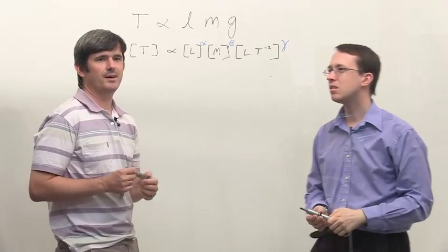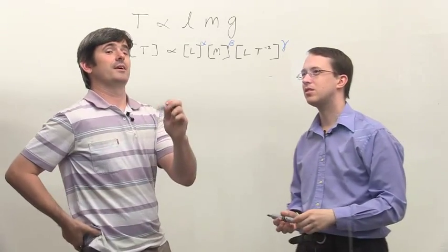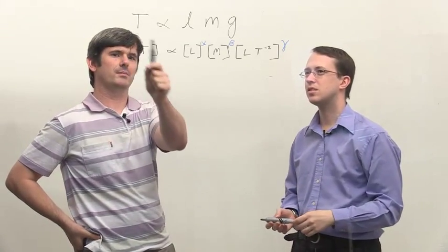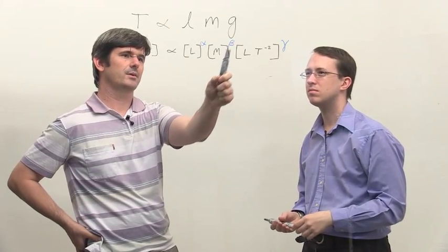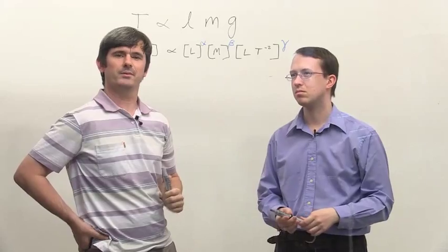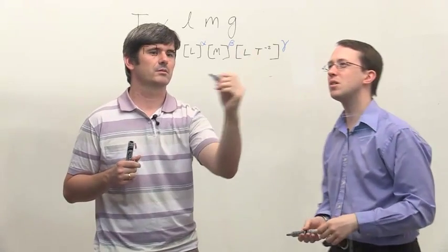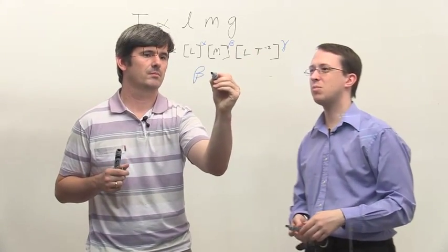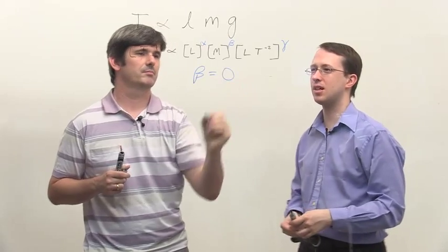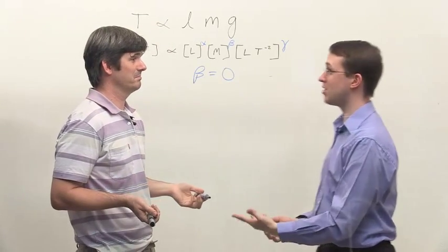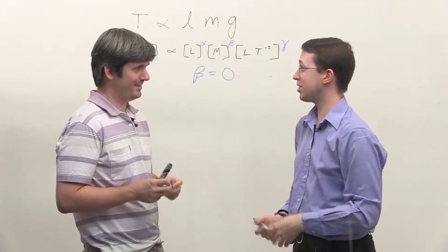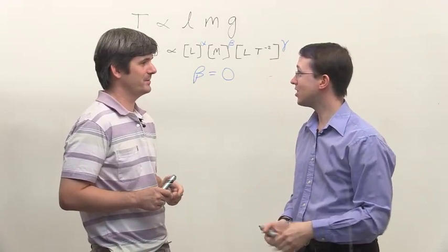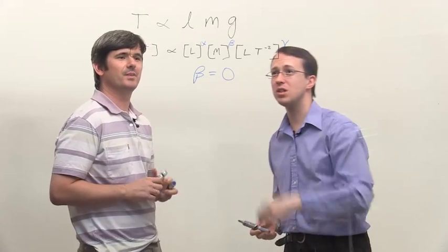Well, let's have a go. So I'll do the easy one first. There's no mass over here, and there's only one occurrence of mass here. So beta must be zero. Okay. I'd agree with that. So the period of a pendulum does not depend upon mass in the slightest. So we've used our intuition. We said it might be something to do with mass. We were wrong. We couldn't remember the equation. My gut feeling was wrong. Your gut feeling was wrong. Absolutely. Beta is zero.